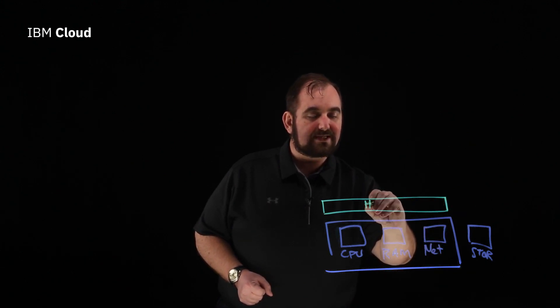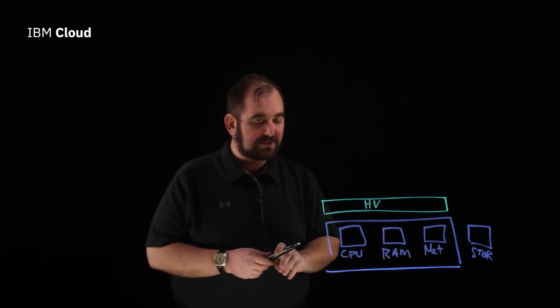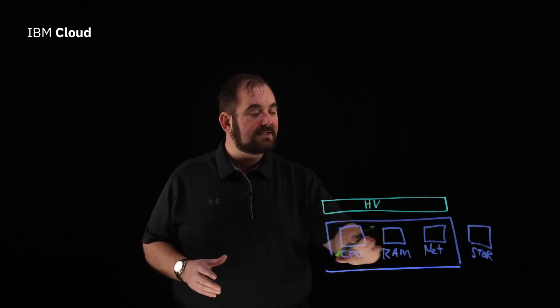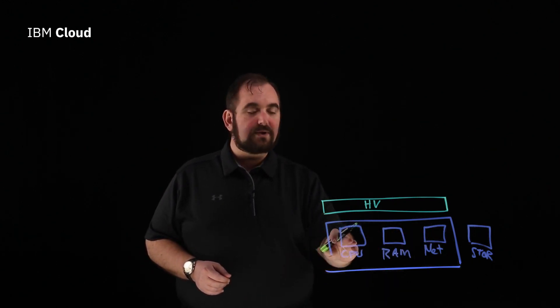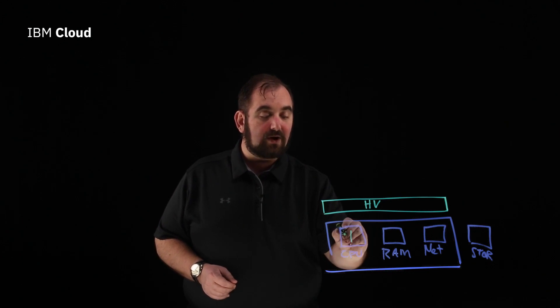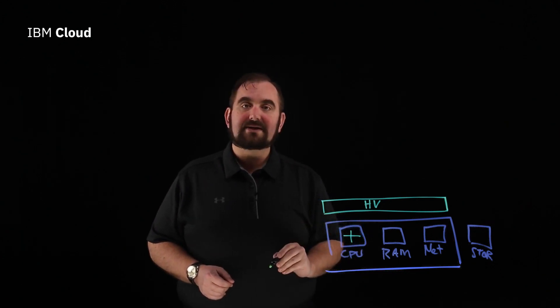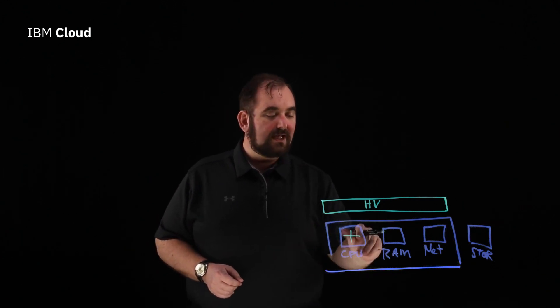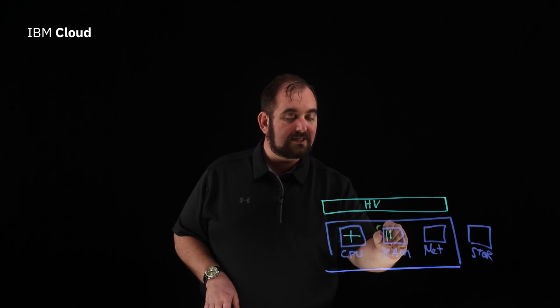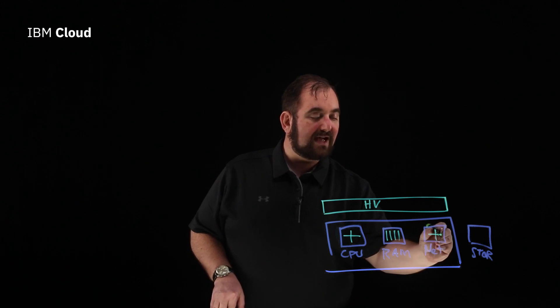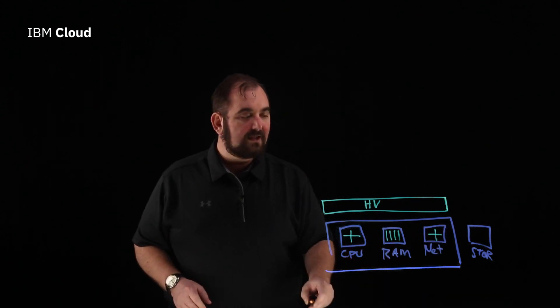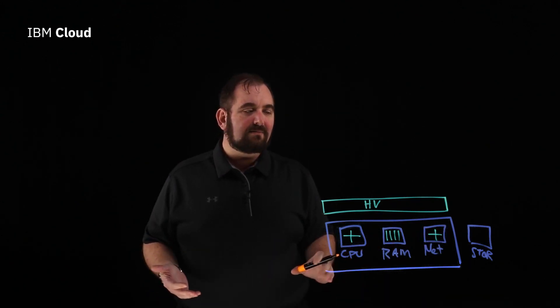The hypervisor is a software layer that sits on top of the compute host and virtualizes all of the functions of that host. It's going to take your CPU — your processors — and divide them into subparts. It's going to take your RAM and slice it up into subparts. And it's going to take your network and divide it into subparts.